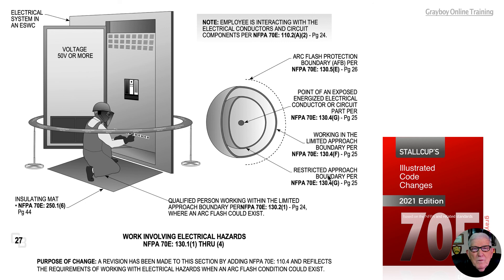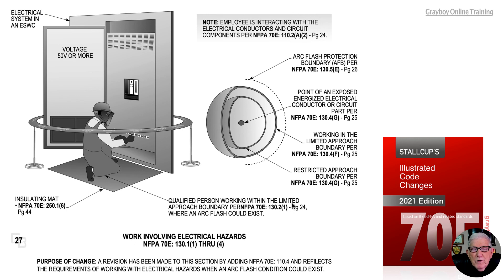If you're using one of what I call the "gimmes" for working energized — the exceptions and exemptions that the code recognizes, which we will be talking about a little bit later in this presentation — notice a qualified person is working within the limited approach boundaries and follows the rules in 130.2, especially item 1 on page 24. That's what this illustration is conveying to the user of NFPA 70E.